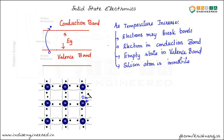This electron that came out of the bond can move anywhere throughout the crystal. This electron, which is in the conduction band, can move throughout the crystal and can contribute to conduction. But it is a little bit complicated in the case of the valence band.